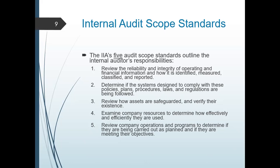Next, examine the company resources to determine how effectively and efficiently they are used — the materials, the labor, and the system itself. The internal auditor should ensure that the use of the system is only for legal and correct purposes, with proper authorization, authentication, segregation of duties, and other controls. Lastly, the internal auditor should review company operations and programs to determine if they are being carried out as planned and if they are meeting their objectives — to help management achieve organizational goals effectively and efficiently. The auditor should know the operation of the company to identify where controls may be insufficient, excessive, or entirely absent.